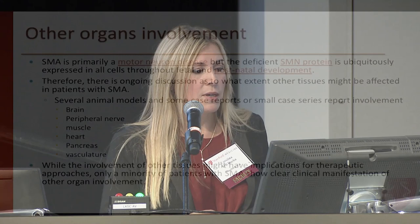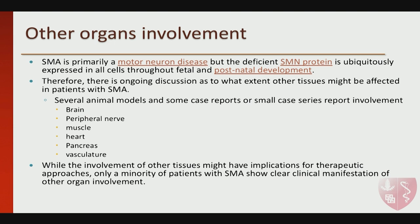In terms of other organ involvement: the most vulnerable cells appear to be motor neurons in the spinal cord and brainstem, but the SMN protein is ubiquitously present in all cells throughout the body and is important for postnatal development. The question is how much we will start seeing — as we modify these phenotypes — the effect of SMN in the brain, peripheral nerves, neuromuscular junctions, muscle, heart, pancreas, and rest of the vasculature. These are all open questions as we continue in the treatment era.